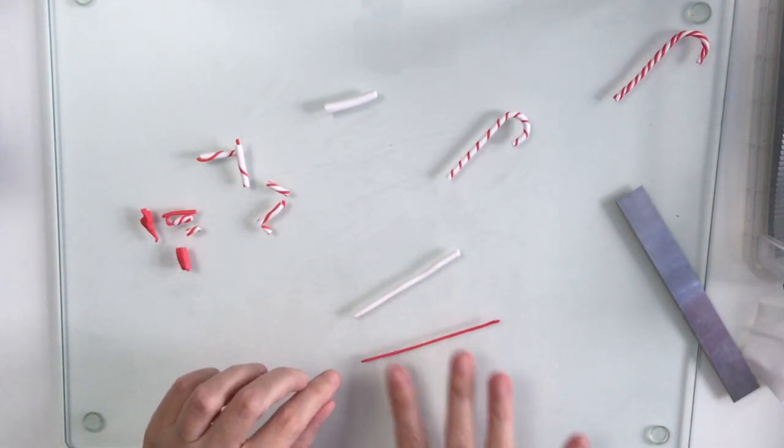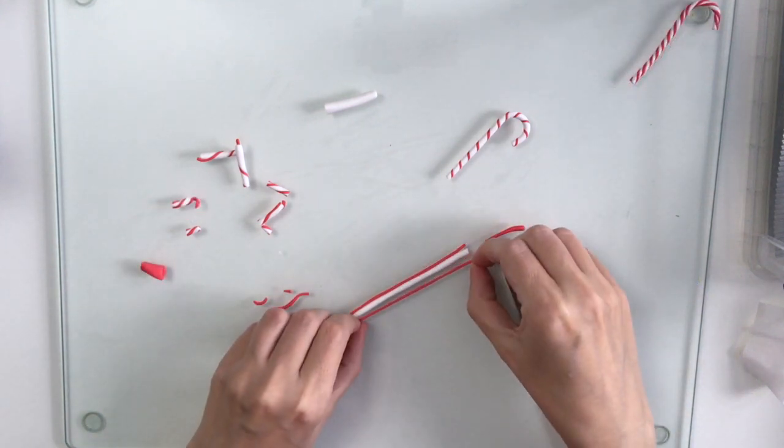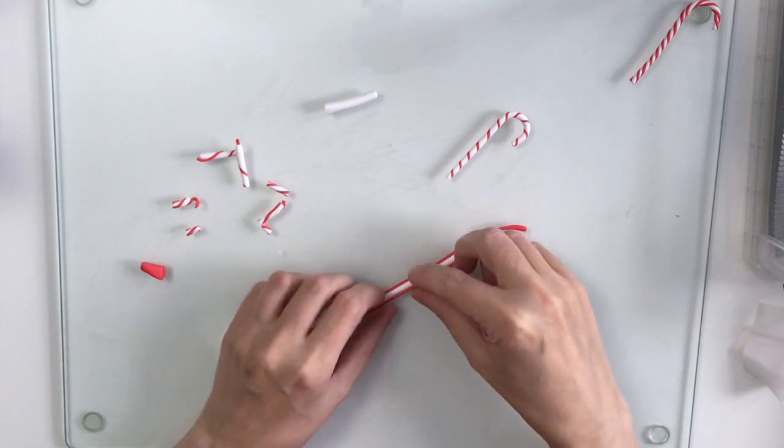For some variety in your candy canes, you can add more than one strip of red clay. I'm going to add two to this one, making sure that they're stuck well down.